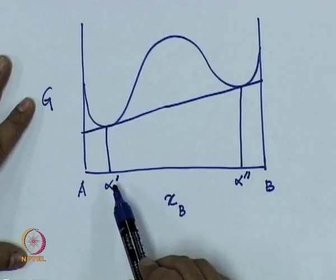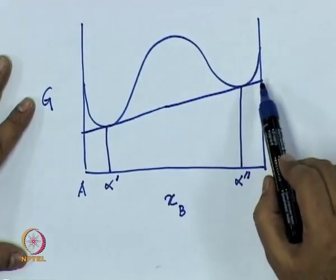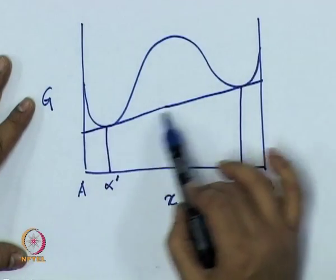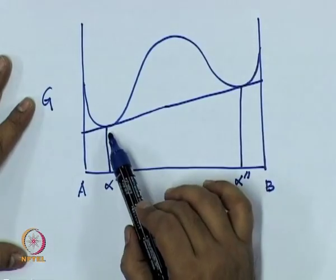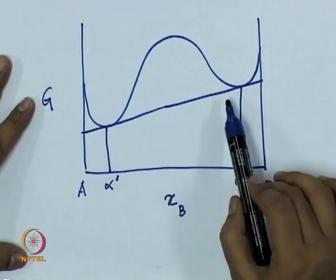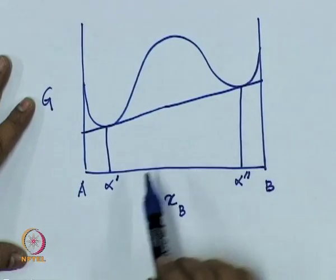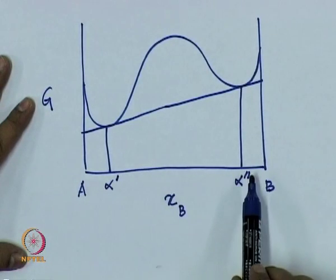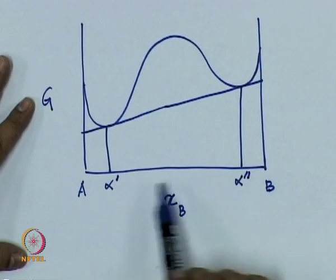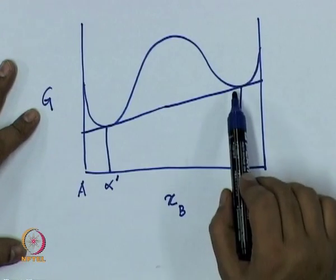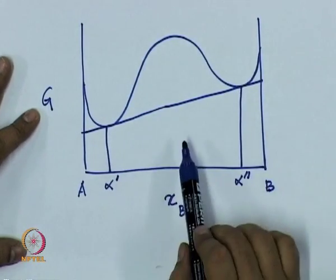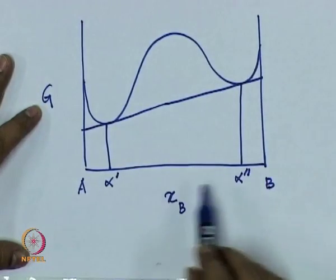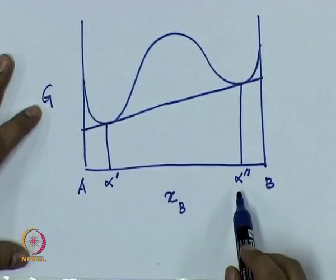The system phase separates because this is the concave region, which is not preferred thermodynamically — the convex regions are preferred. The concave region is replaced by the convexified version, which is a straight line representing the free energy of a mechanical mixture of alpha prime and alpha double prime. Depending on composition, only the volume fractions of alpha prime and alpha double prime will be different, but the end compositions of alpha prime and alpha double prime remain the same anywhere in this region.